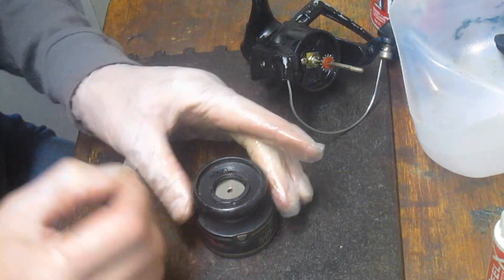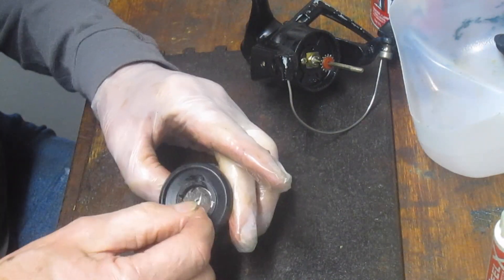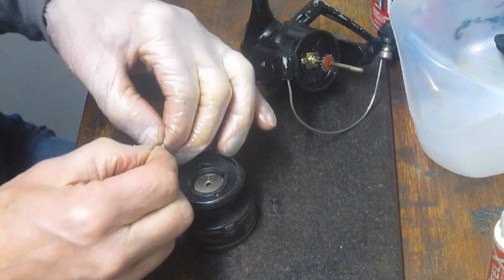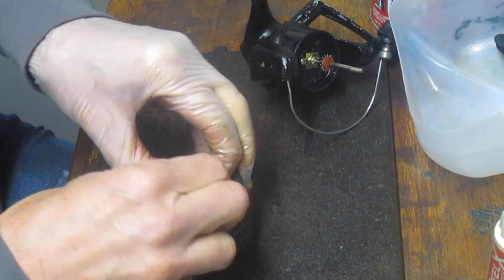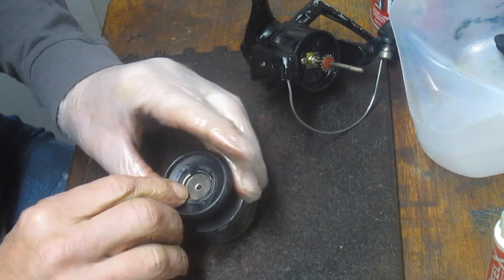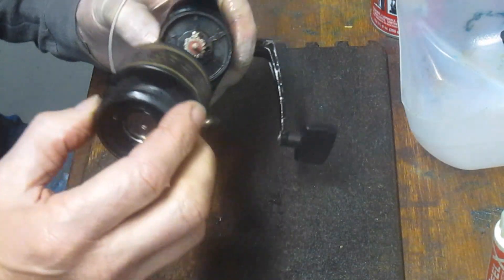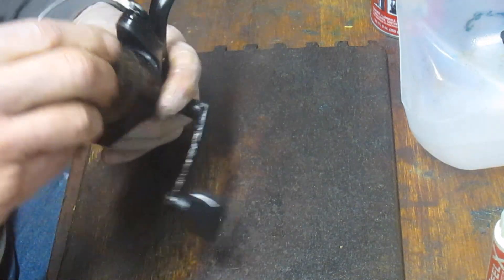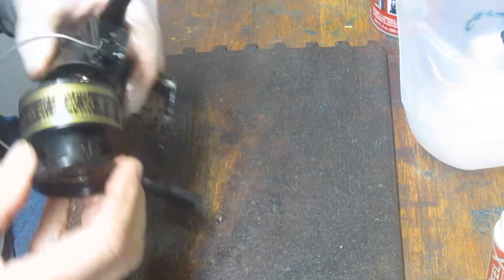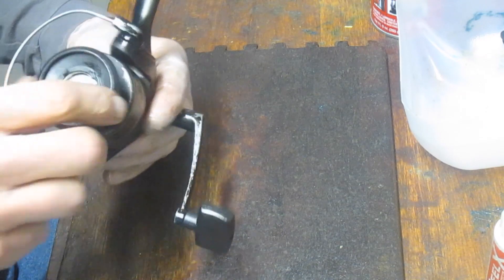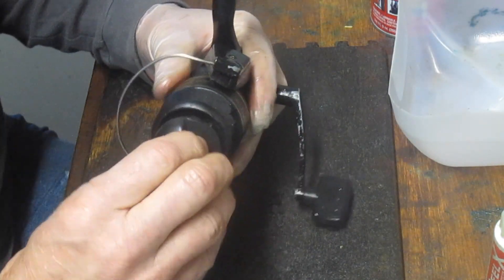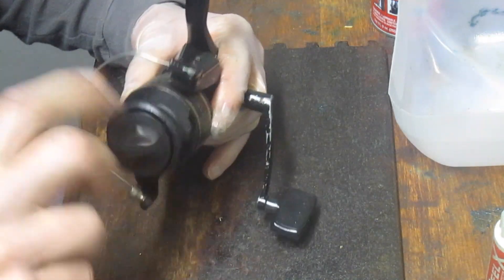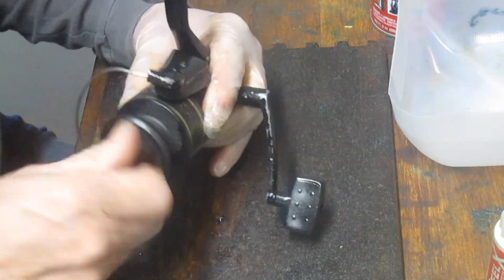And then when you go to reinstall the clip, do not put the tab end right at the clip. Try to find the midpoint in here. Just work it around. Watch it. It can spring if you don't get it right. There you go. That's the answer there. That clip doesn't do anything but hold the drag stack in place. The work of tensioning the drag is done by the drag adjuster knob here. And we'll just go put that on.